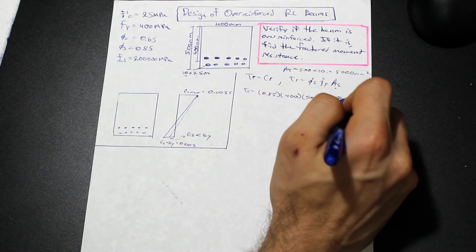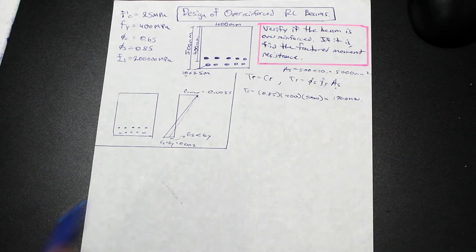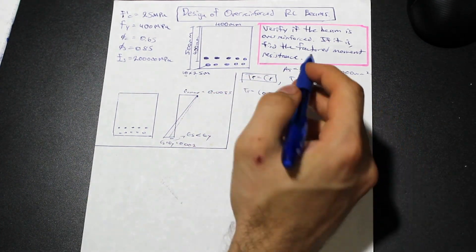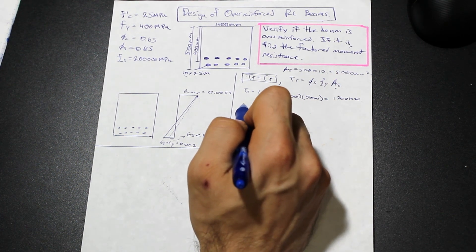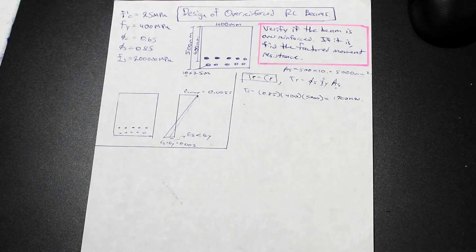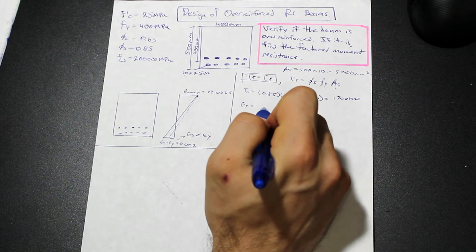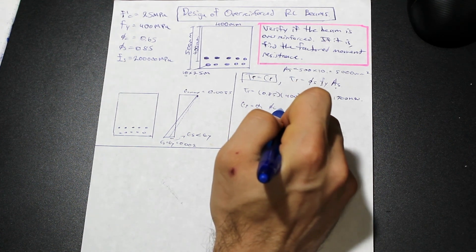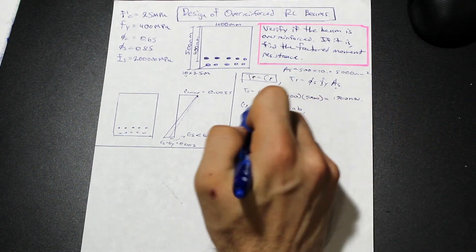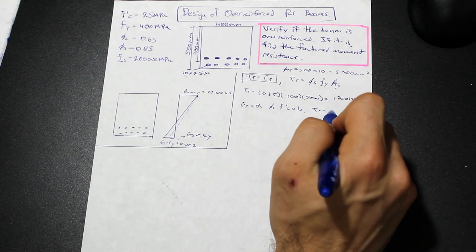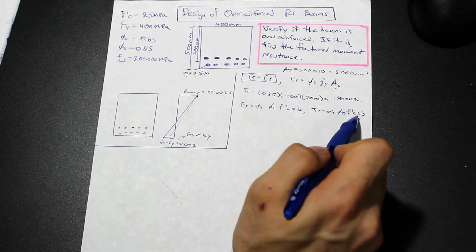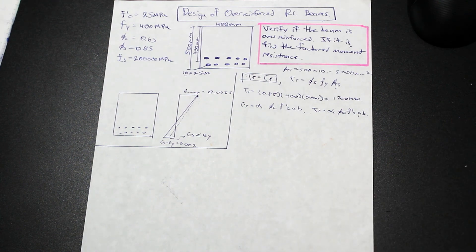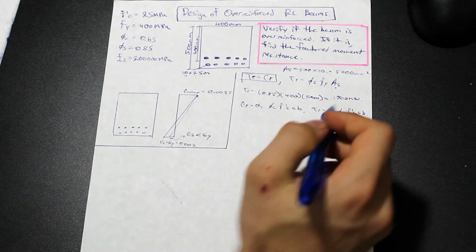We calculate the tensional force and arrive at Tr = 1700 kN. Using the equilibrium equation where Tr equals Cr, we know Cr = α₁ · φ_c · f'c · a · b. We set Tr equal to Cr and solve for 'a', which we need in order to find 'c' and verify whether the beam is over-reinforced or balanced.